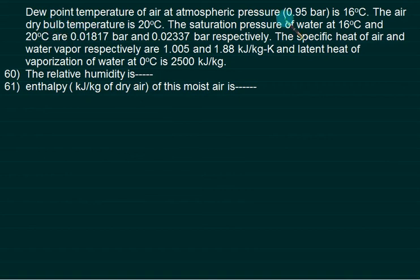In this question, the dew point temperature of air at 0.95 bar is given. What is atmospheric pressure and what is the dew point? Dew point is DPT, 16 degrees Celsius, and the dry bulb is given as 20 degrees Celsius.